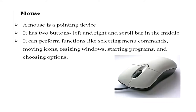The next input device is the mouse — again, a very common device you must have seen around your computer. It is a pointing device that generally has two buttons, left and right, with a scroll wheel in the middle. It is used to perform functions like selecting menu commands, moving icons, resizing windows, starting programs, and choosing various options.